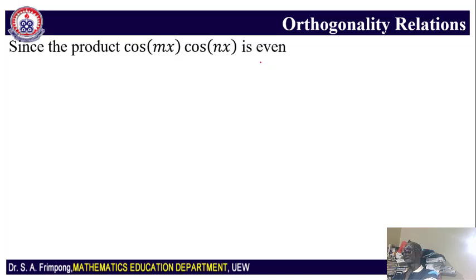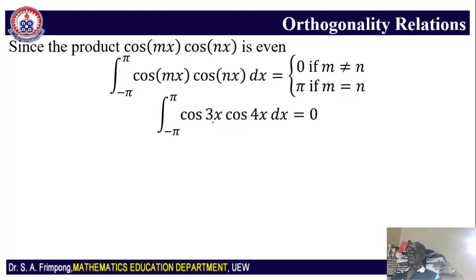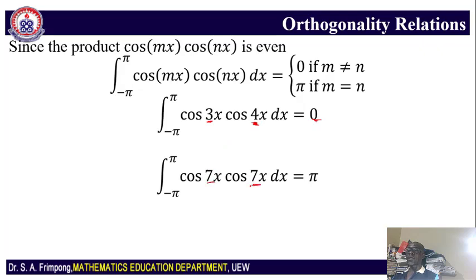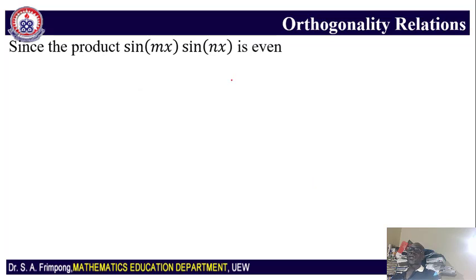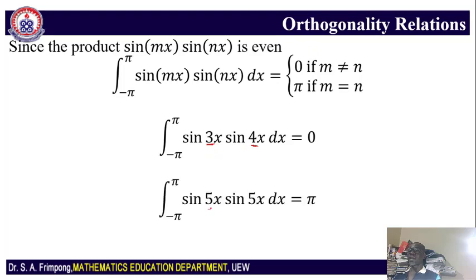Now for the product cos(mx)cos(nx), which is even, the integral from negative π to π is 0 if m is not equal to n, and π if m equals n. For example, if m = 3 and n = 4, they are not equal, so the integral is 0 without any calculation. If m = n = 7, the answer is π. Similarly, for sin(mx)sin(nx), the integral from negative π to π is 0 if m ≠ n, and π if m = n.